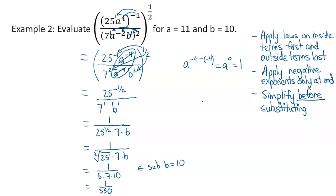Some of you might be inclined to put the 11 and 10 in right away, but it would mean writing more out. It would be easier — especially if I give you numbers like 1000 or 110 — to simplify with the letters first and substitute only when needed.